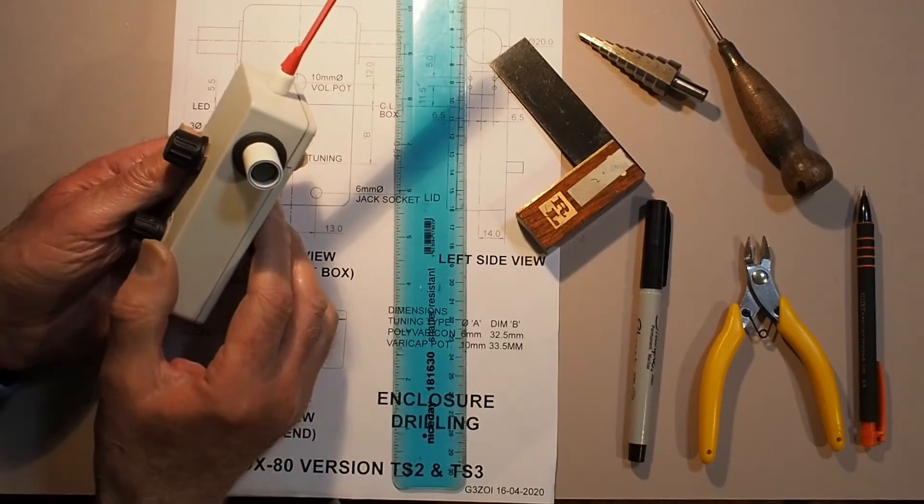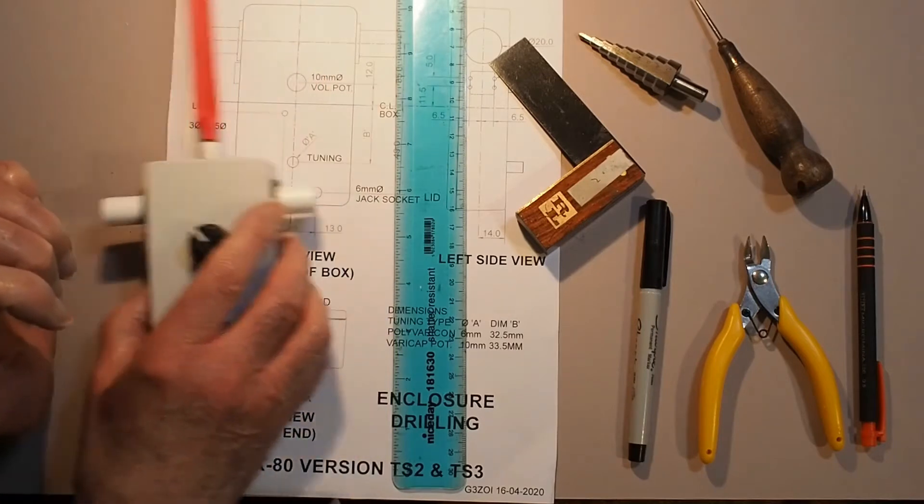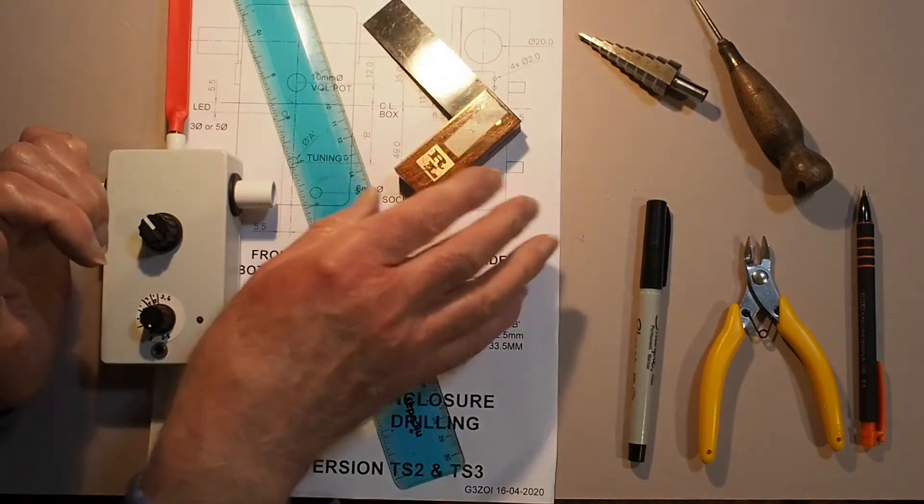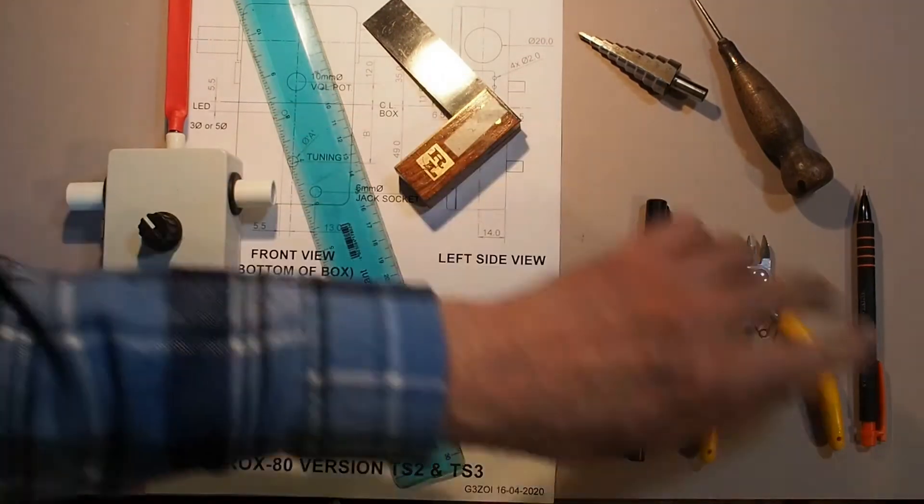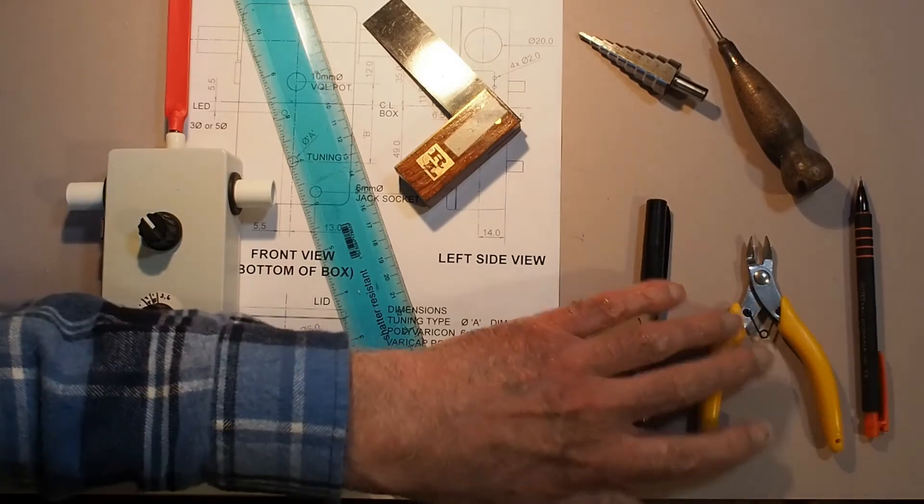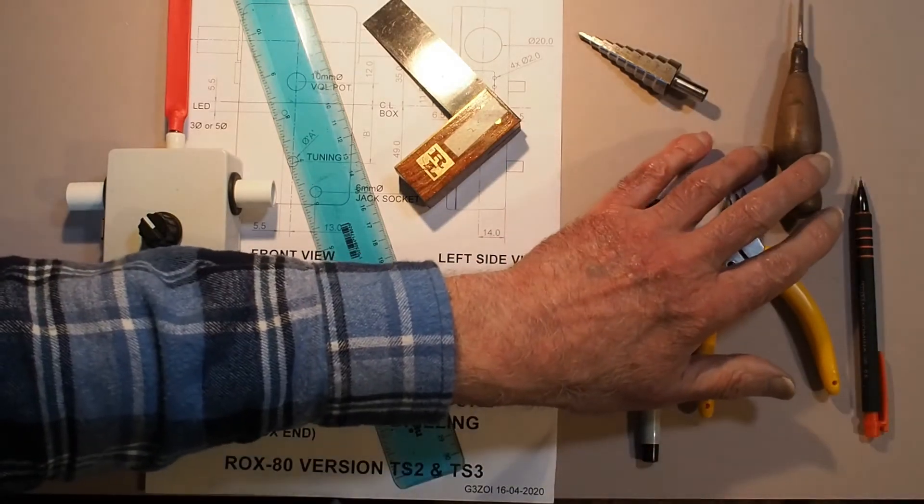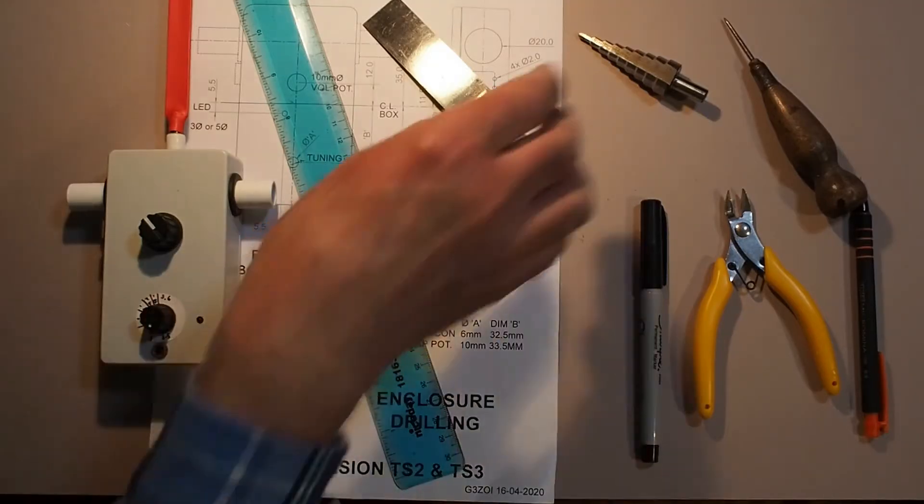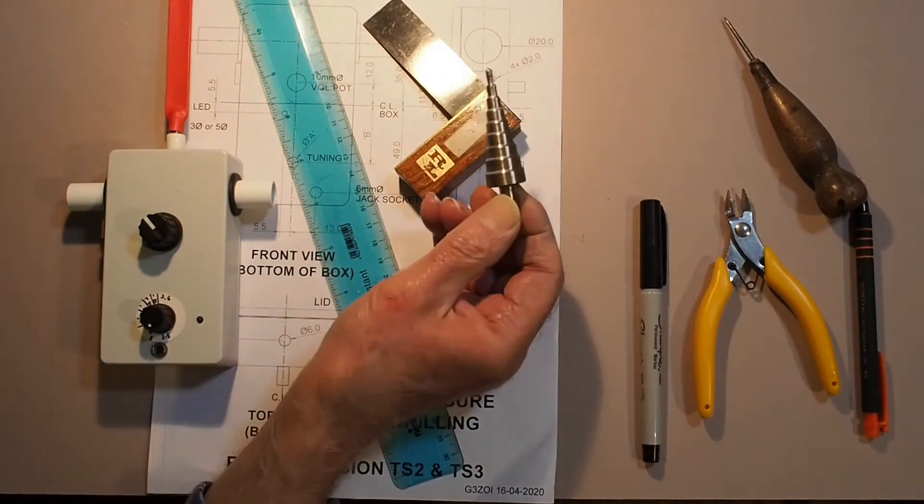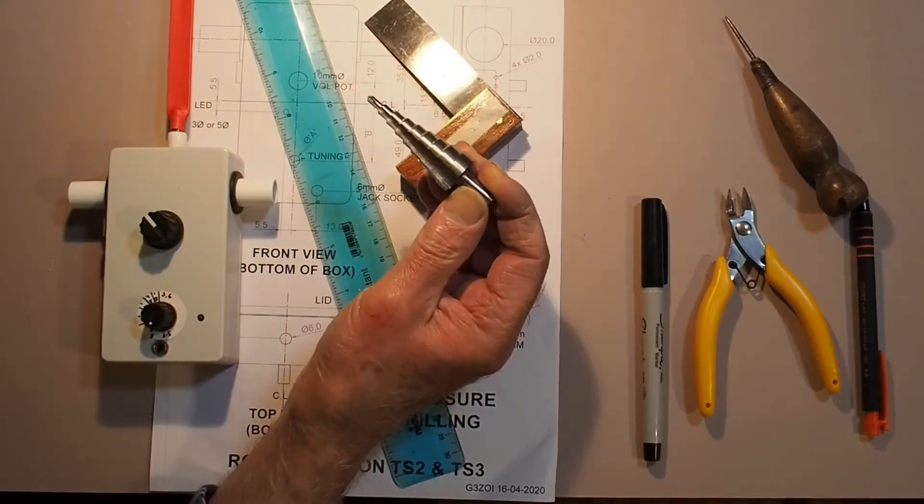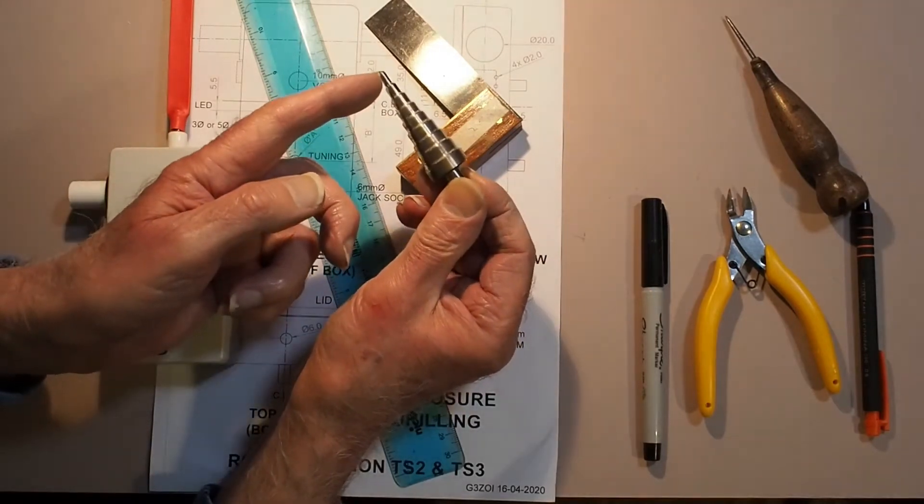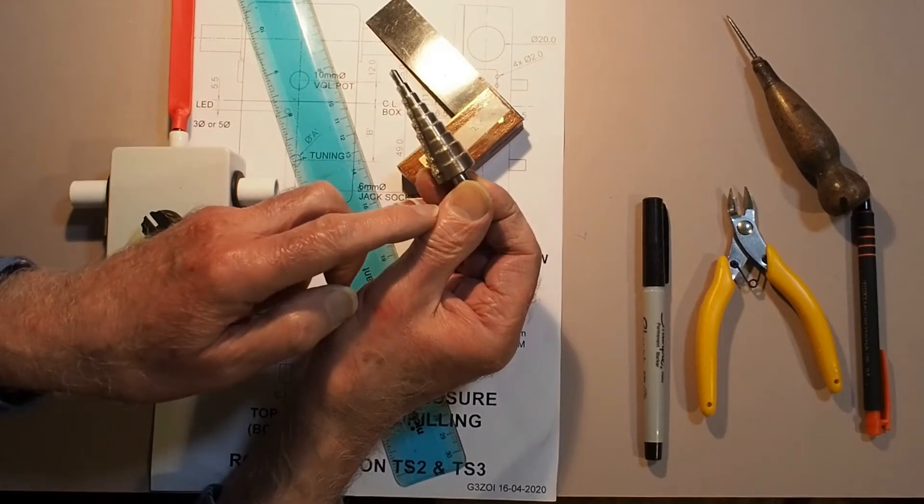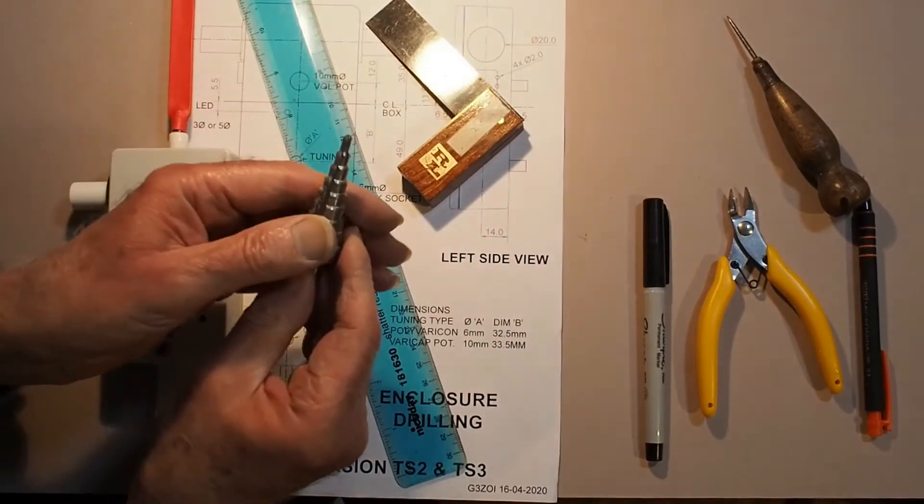You'll need some tools: ruler, set square, a fine pen, some snips, something to mark the centers of the holes. To drill the holes I use one of these stepped drills - this one goes from 4 millimeters to 20 millimeters. You can drill the smaller holes with a standard wood drill, but for the larger holes I find this the best method.